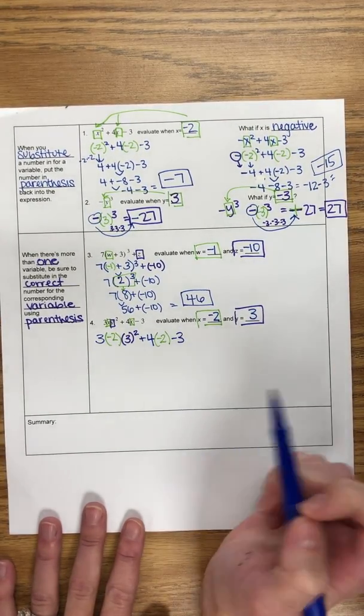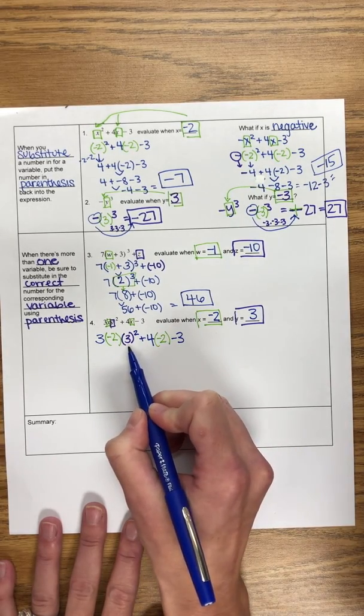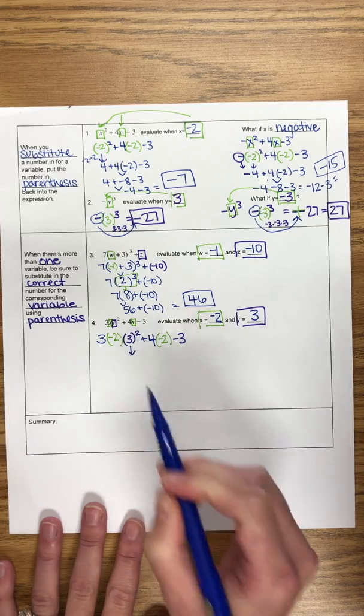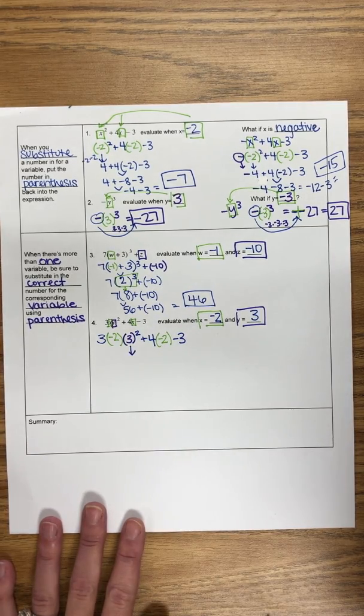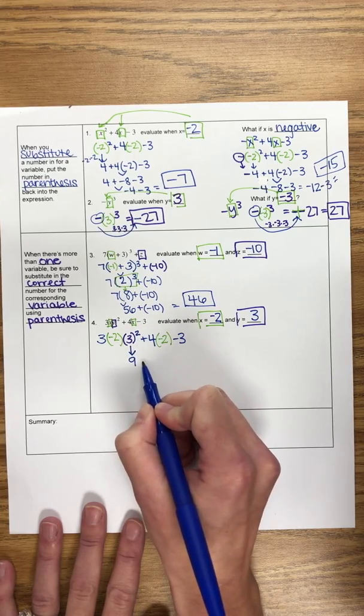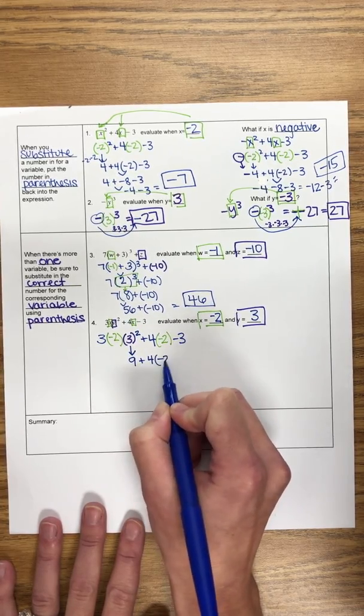And then we follow PEMDAS still. So exponents first here. So 3 squared is what we're working with, which is 3 times 3. That's 9. Everything else stays exactly the same.